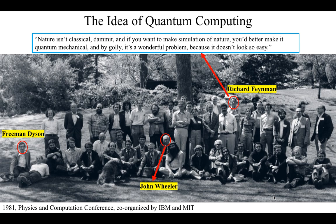There are also two interesting facts about this picture. First, you can see John Wheeler, Feynman's PhD advisor — a giant theoretical physicist in the Manhattan Project who coined the term 'wormhole.' And also Freeman Dyson, a theoretical physicist with no PhD who never liked the PhD system in the US, and unfortunately died a month ago.